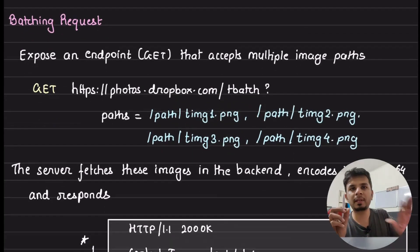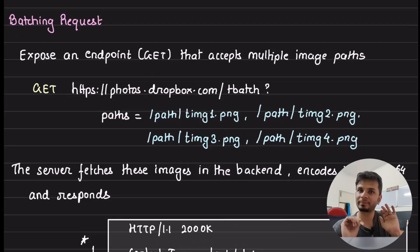So, what do you do? You expose an endpoint whose job is to do a thumbnail batch. And in which it accepts paths which are comma separated path strings to those particular thumbnails. For example, if you want to load thumbnail 1, 2, 3 and 4, you take those paths and pass it through this HTTP 1.1 rest endpoint that you are requesting for thumbnails of this 4 photos.